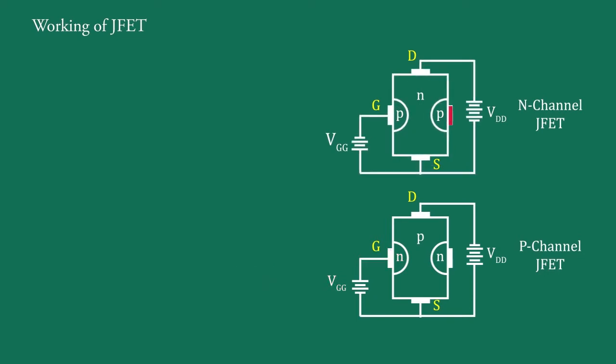Here, this region of gate is internally connected with this one and here also. This region of gate is internally connected with this region of gate. So, no external connections are shown. Now, we will discuss only N channel JFET.